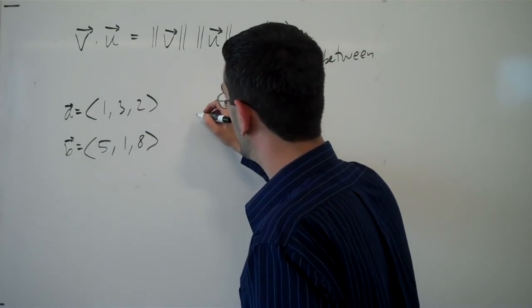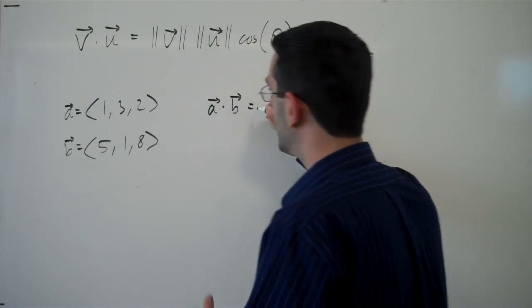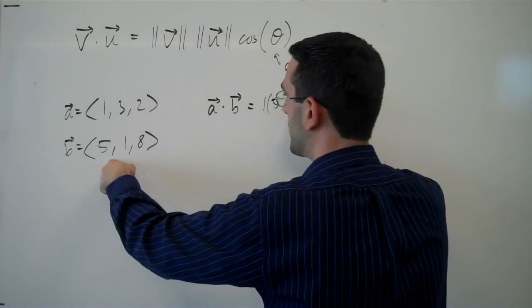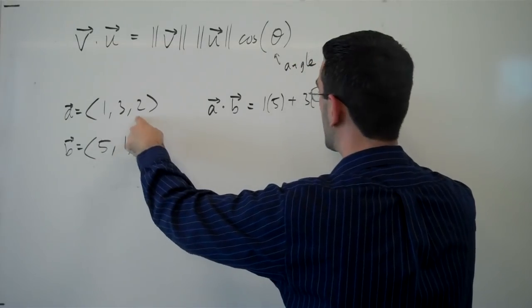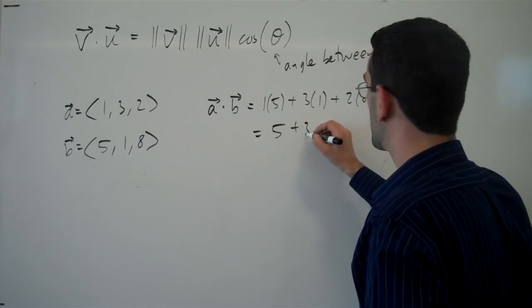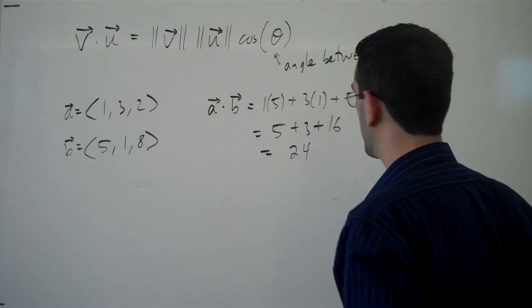then the dot product of these two vectors will be the product of the x components plus the product of the y components plus the product of the z components. So 5 plus 3 plus 16 equals 24.